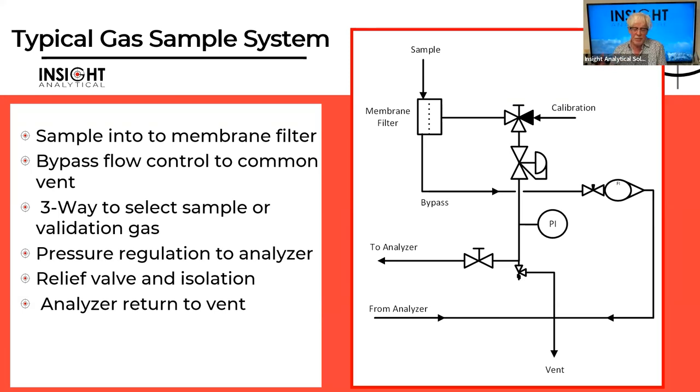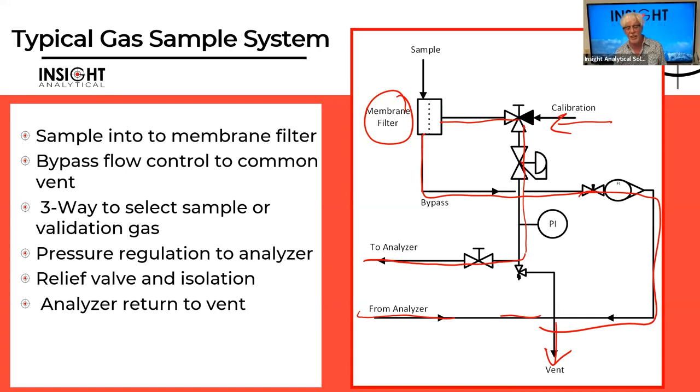If we think about a typical sample system for a gas phase application, specifically around sampling natural gas, this PID may be similar to a lot of the ones that you would see. Sample coming in, going through a membrane filtration unit. We have the filtered side going off to a regulator. We have the opportunity to bring in a calibration gas as well.